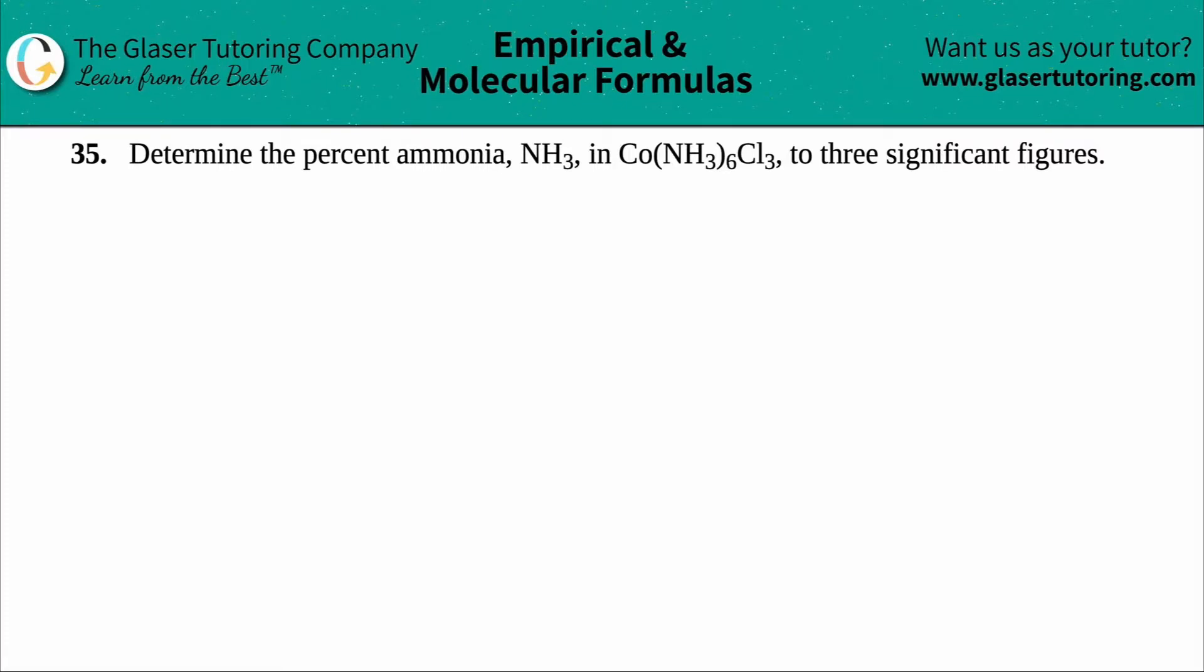Number 35. Determine the percent ammonia, which is NH3, in Co(NH3)6Cl3. And we need it to be in three sig figs or three significant figures.